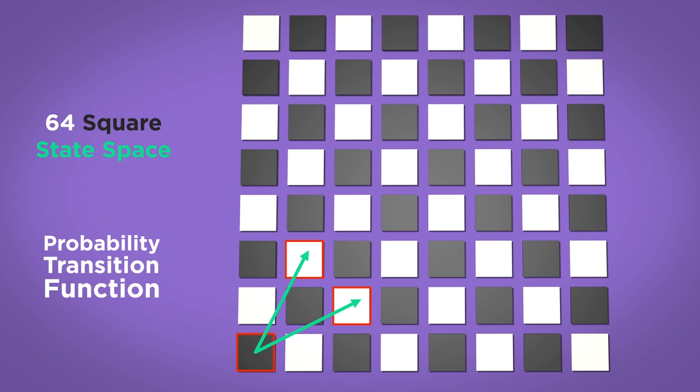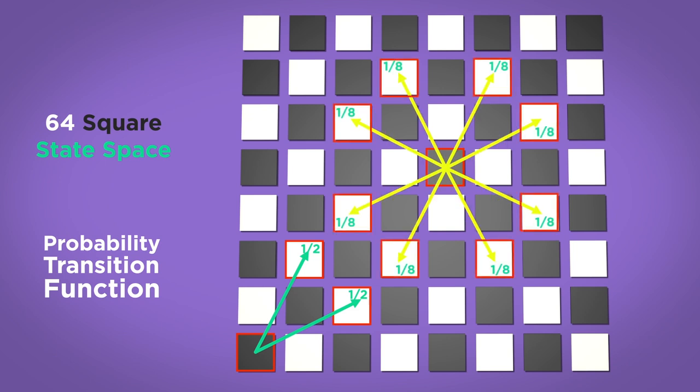These arrows show us that from the corner, the knight has a one-half chance to jump here, and a one-half chance to jump here. From a central square, we show the eight equally likely jumps with these arrows. A similar story holds here. We could keep filling in the chessboard with arrows like these, or these, or these.